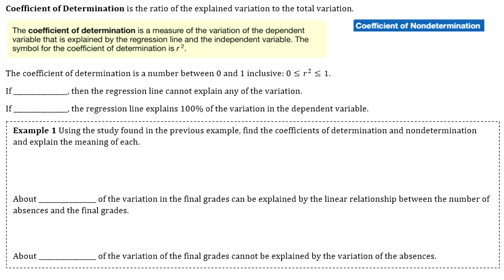The first measurement we're going to look at is called the coefficient of determination. That's the ratio of the explained variation to the total variation — it's a measure of the variation of the dependent variable explained by the regression line and the independent variable. The symbol for it is r squared. Since r is always between zero and one, squaring it will always give another number between zero and one, so r squared is also between zero and one.